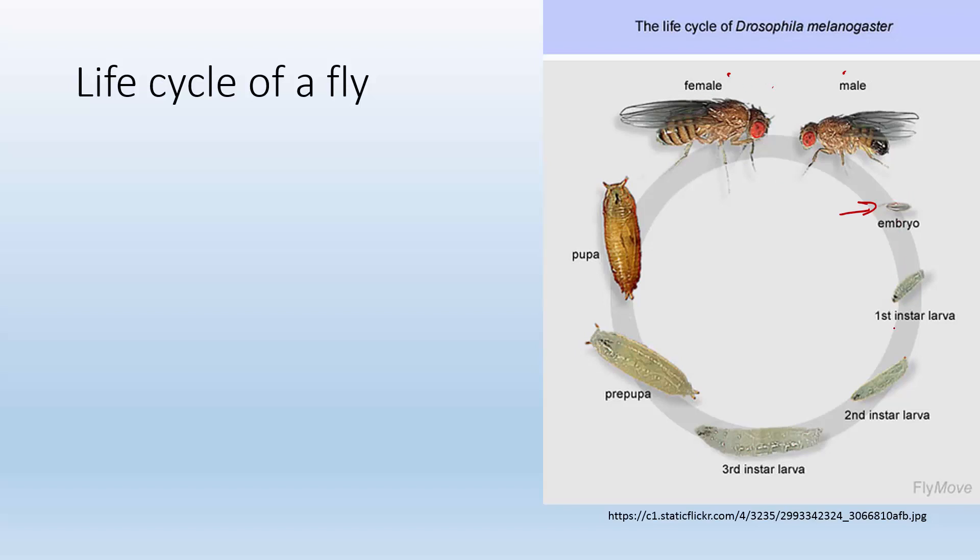Well first it needs to hatch and become its first instar larva, and basically the instars they're just talking about for insects to grow they need to molt and shed their skin in order to get bigger. So we have this maggot, it's its first form, first instar, it's going to eat and grow and it's going to have to molt and shed its skin and that's when it's going to become the second instar larva which is going to do the same thing. It's going to eat and grow, it's going to have to shed its skin, become the third instar larva.